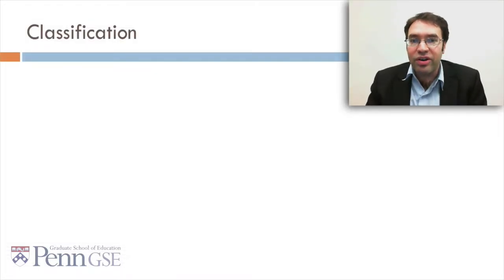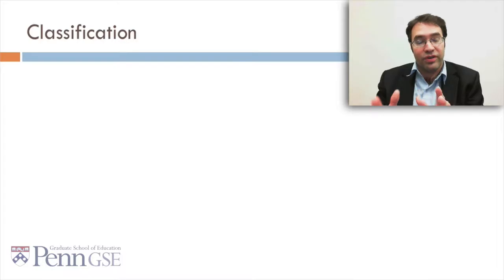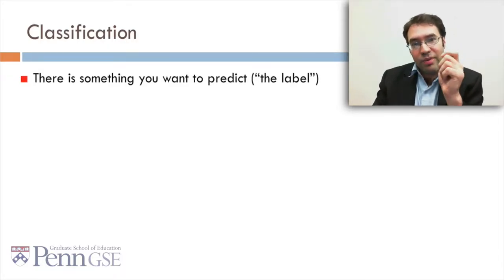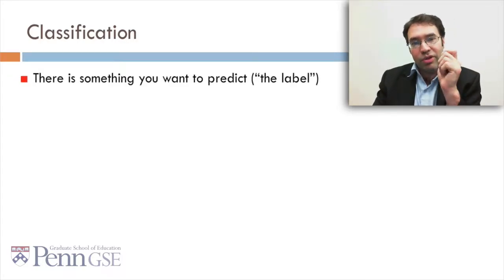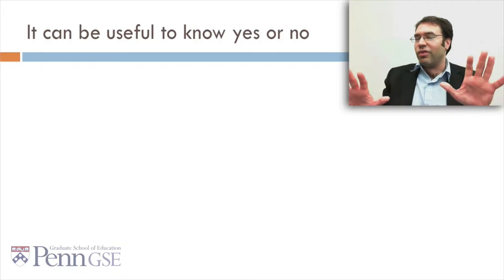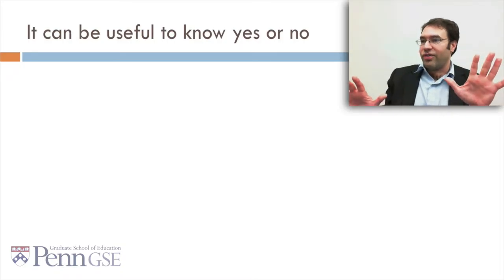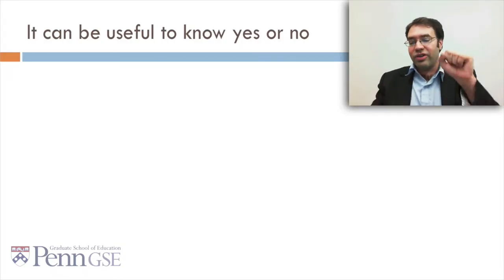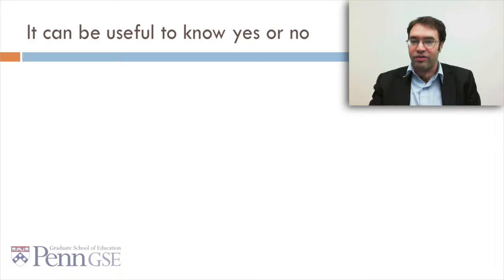Let's quickly reconsider classification. As you may remember, in classification there's something you want to predict, called the label or the predicted variable, and that something is categorical. It can be useful when you're classifying to know yes or no, to get an answer yes or no to a question.